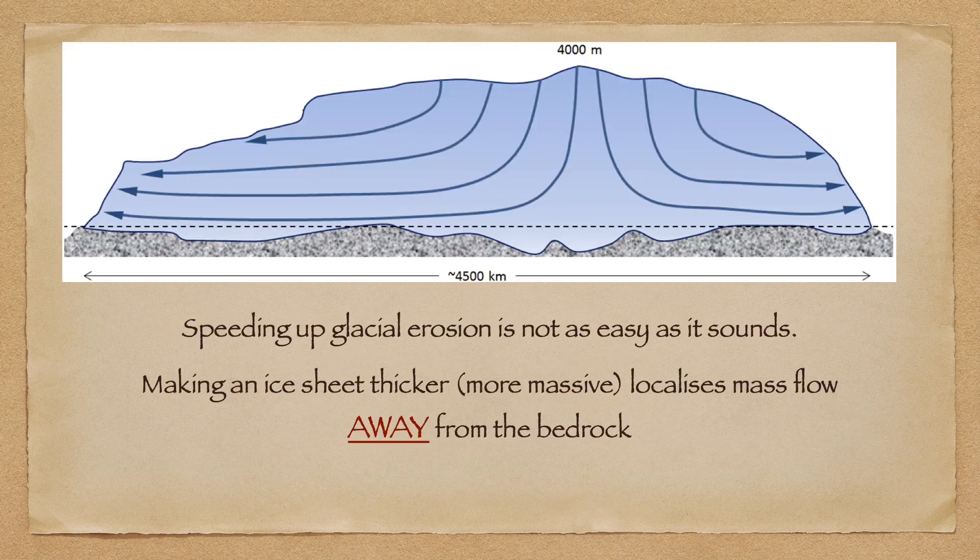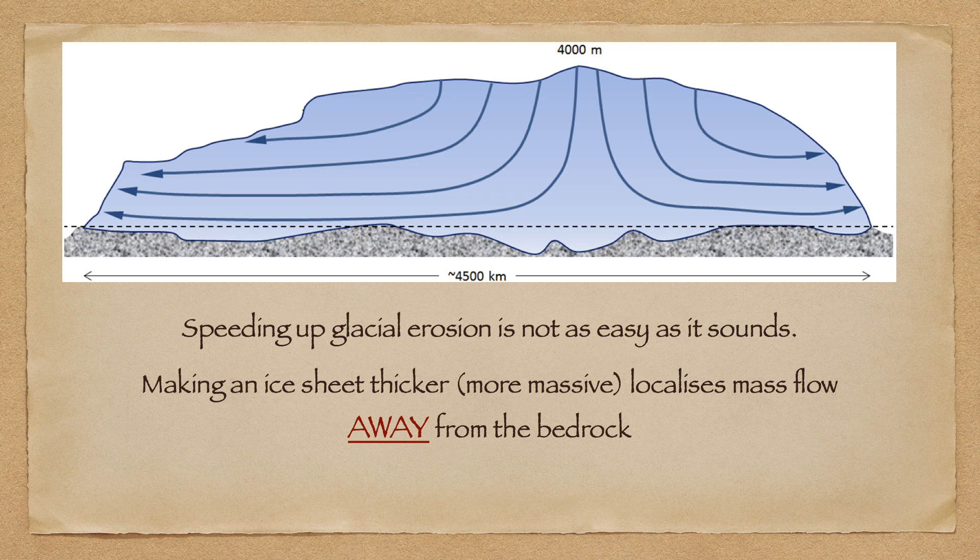Just before I let you go, I want to quickly explore the young earth creationist suggestion that if they just speed everything up, all of the problems with their chronology will disappear. The essential problem for young earth creationists is that you can't just speed stuff up. It often just doesn't work. Let's take the case of glacial erosion. It would seem sensible to suppose that if you just make the ice sheet thicker, there should be more erosion. But it doesn't work like that. The thicker you make the ice sheet, the more gravitationally unstable it becomes and the more it wants to flow, and the more that flow occurs away from the bedrock interface. Weakening the bedrock won't solve the problem, because in that case the ice sheet simply won't form, because the bedrock cannot sustain enough stress to withstand that lateral flow.